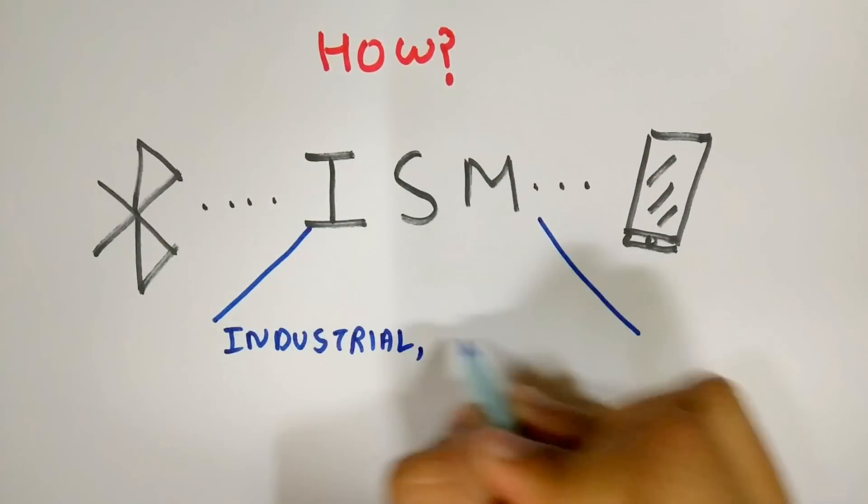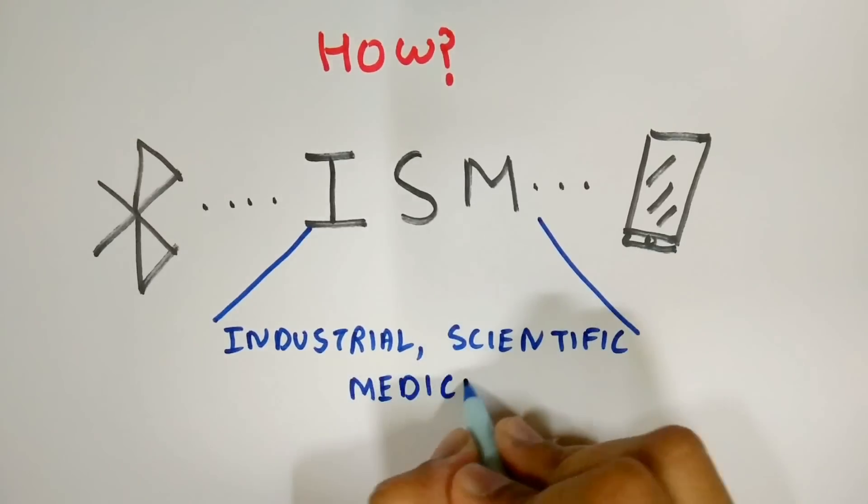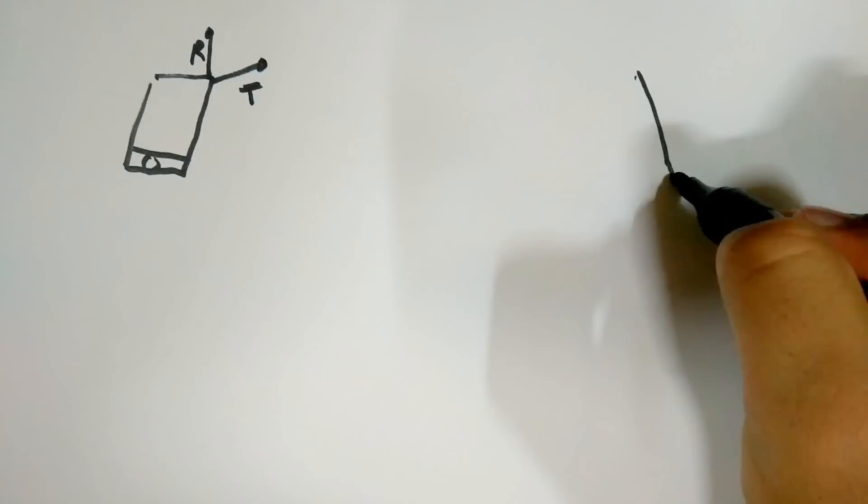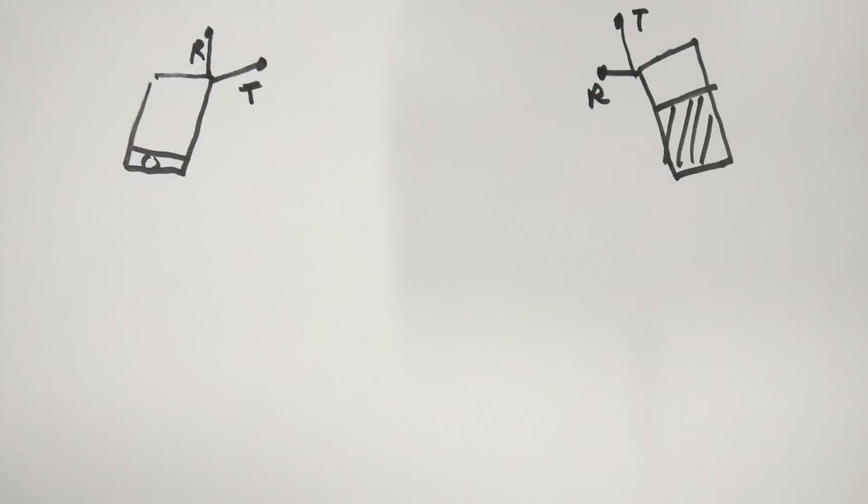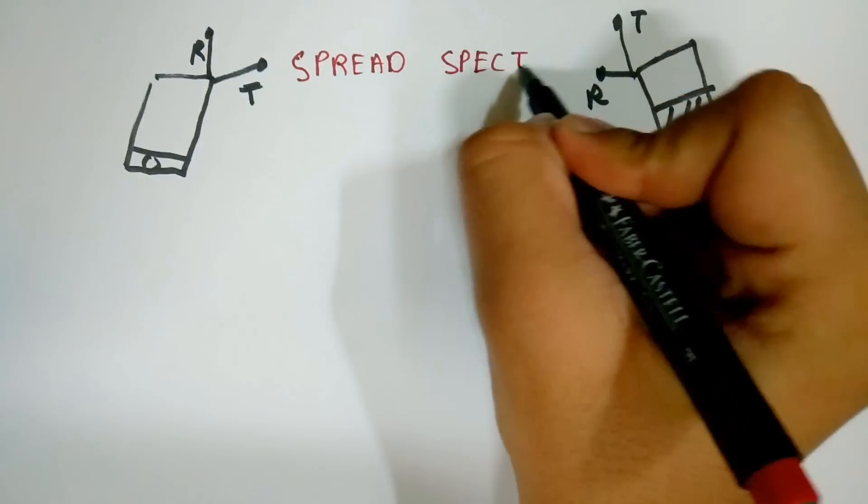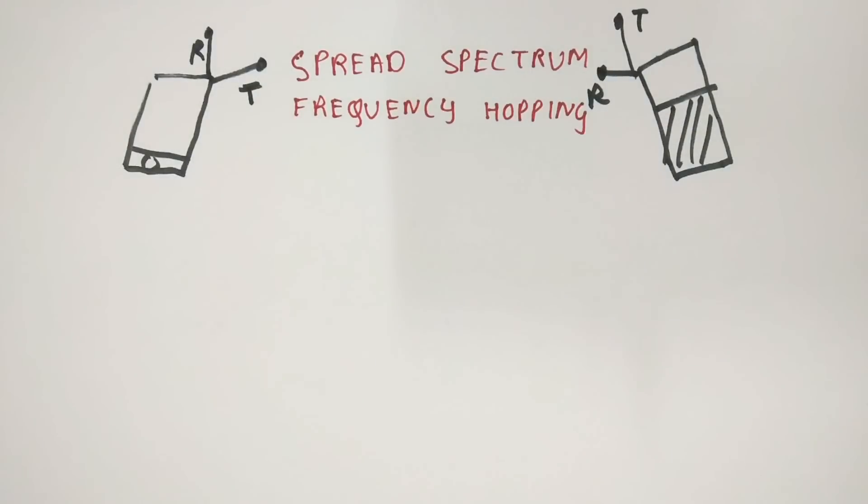ISM stands for Industrial, Scientific and Medical Devices Band. Every Bluetooth device has a transmitting and a receiving antenna. The file is transferred by the spread spectrum frequency hopping technique.